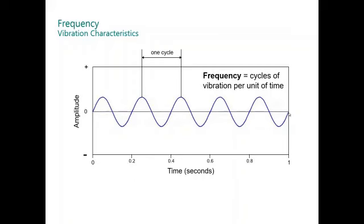The frequency is the inverse of the period, the number of cycles per unit of time. In this case, we had one second with five full vibration signals, and this means the frequency is five cycles in one second, or five hertz.